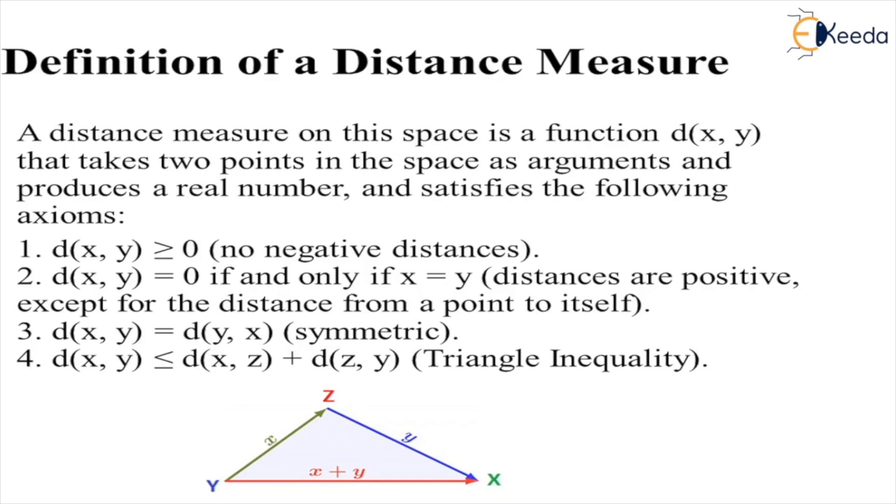Definition of a distance measure: A distance measure on this space is a function that takes two points in the space as arguments and produces a real number, and satisfies the following axioms. First axiom says distance cannot be negative, that is, d(x,y) ≥ 0. Second axiom...